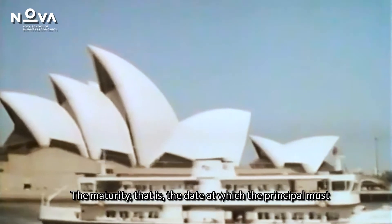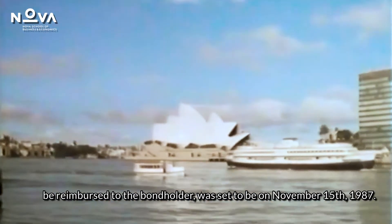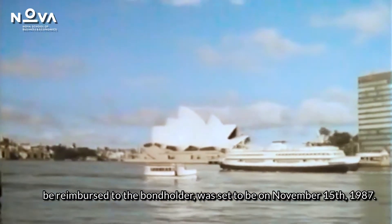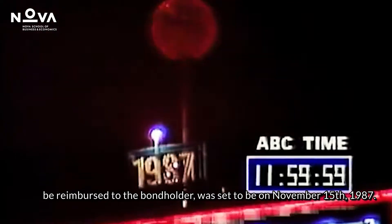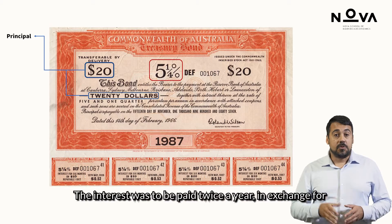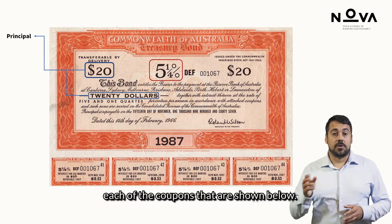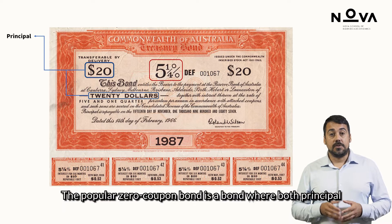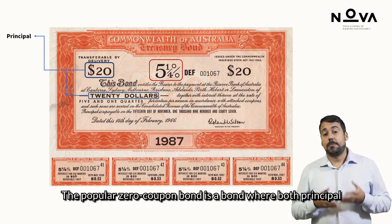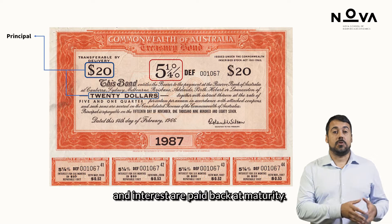The maturity — that is, the date at which the principal must be reimbursed to the bondholder — was set to be on November 15th of 1987. The interest was to be paid twice a year in exchange for each of the coupons shown below. The popular zero-coupon bond is a bond where both principal and interest are paid back at maturity.